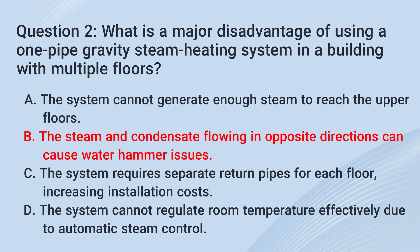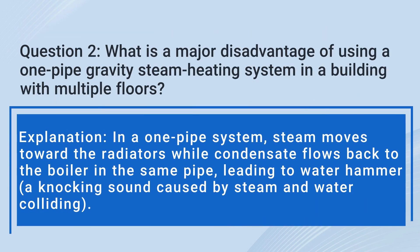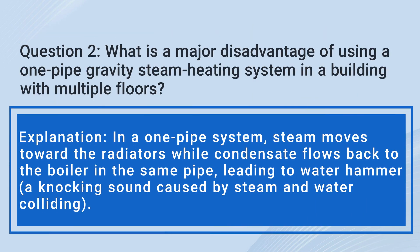The correct answer is B. The steam and condensate flowing in opposite directions can cause water hammer issues. In a one-pipe system, steam moves toward the radiators while condensate flows back to the boiler in the same pipe, leading to water hammer — a knocking sound caused by steam and water colliding.